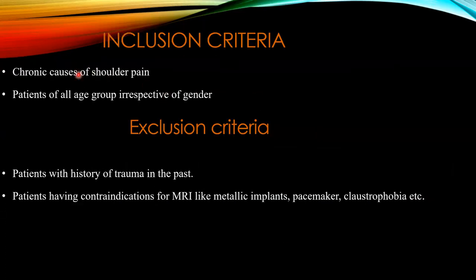The inclusion criteria included patients presenting with shoulder pain of all age groups irrespective of gender. Exclusion criteria included patients with a history of trauma, and patients having contraindications for MRI such as metallic implants and claustrophobia.